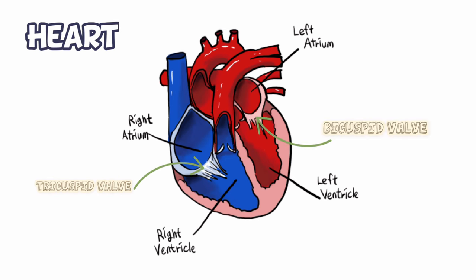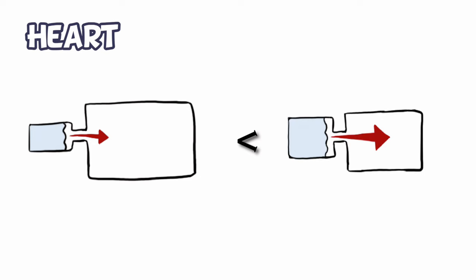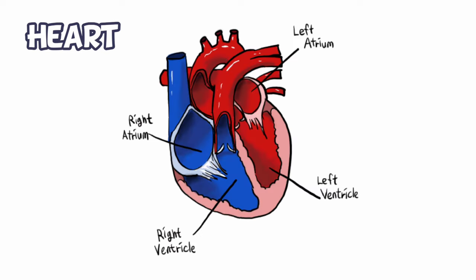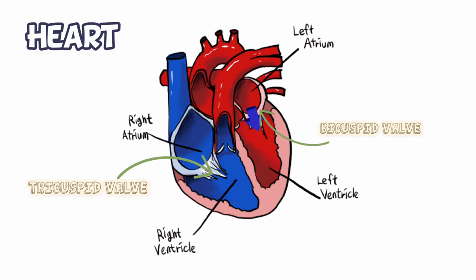Why the difference, you ask? In looking at the heart, you can see that the right atrium is much smaller relative to the right ventricle, as opposed to the left atrium to the left ventricle. If you push a smaller amount of fluid into a larger area, you have less pressure than if you push a large amount of fluid into a smaller area. A tricuspid valve allows for a more circular opening, readily allowing the movement of blood, which is at a lower pressure on the right side. Conversely, the bicuspid valve is better at tackling the high pressure on the left side, being able to spring back in place, avoiding any backflow.